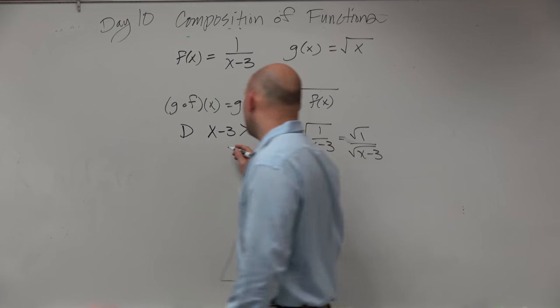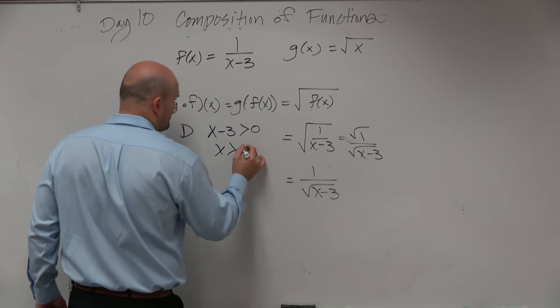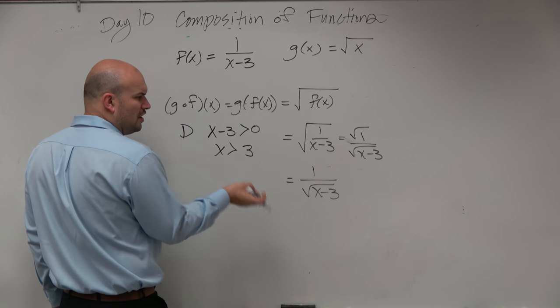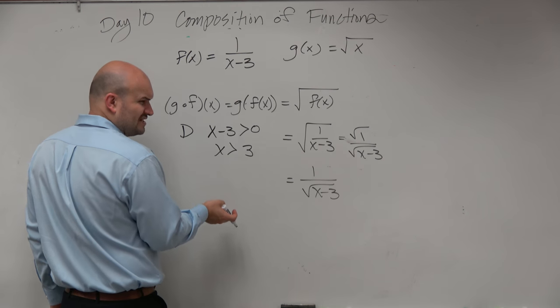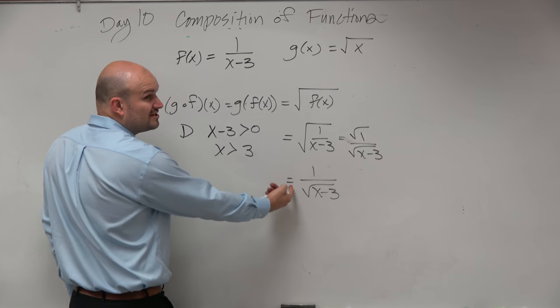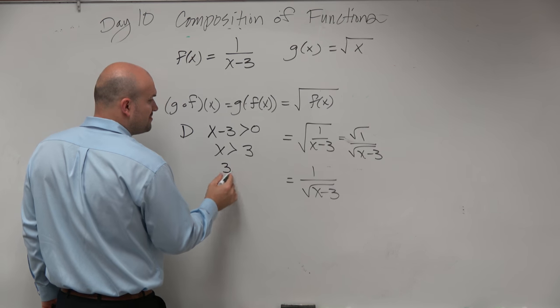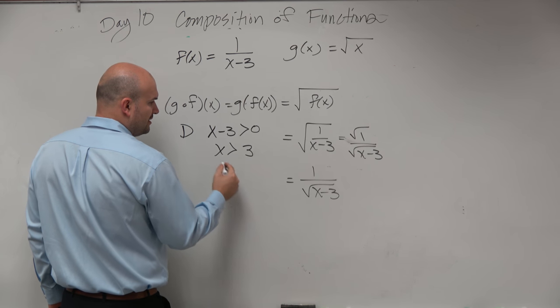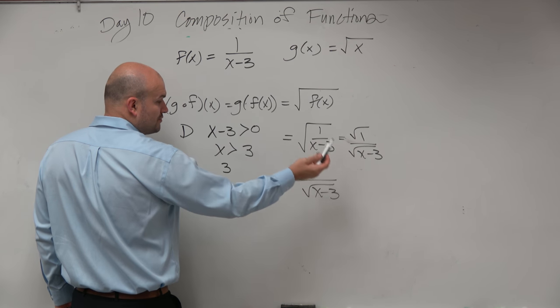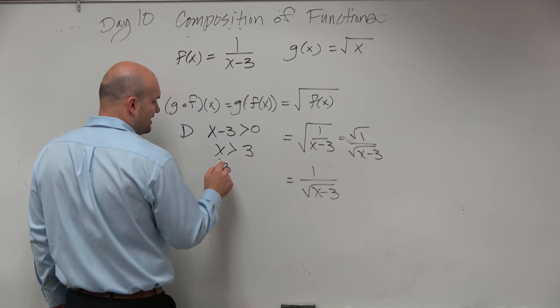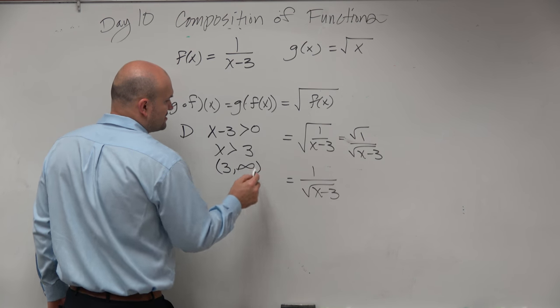So I just go ahead and solve. I see x has to be greater than positive 3. Oh, okay. The lowest number then is 3. Does 0 not work? 0 minus 3 is negative 3. No, 0 doesn't work. It's only 3 and bigger numbers. So 3 is the smallest number. It's not included because if you have 3, that's 0. Square root of 0 is 0. Divide by 0 is undefined. So the domain looks like that.